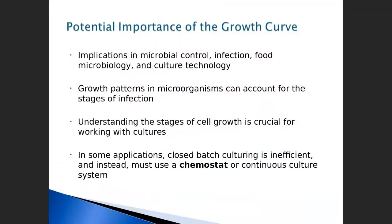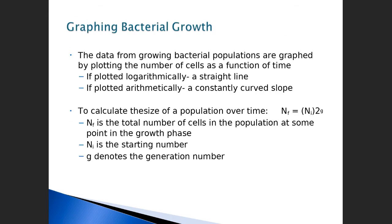As we talked about the standard growth curve, we talked about the fact that it could be used in application to study lots of different things — an infection, food spoilage, growth on a culture medium or in a broth. All these things can be taken into consideration when we think about the growth of microorganisms, especially bacteria that are very predictable in the way that they're going to multiply through binary fission. I'm going to introduce you to a population formula, a population equation.